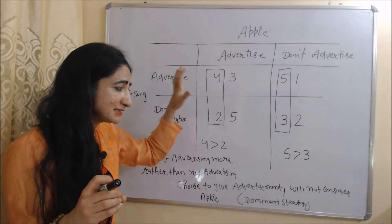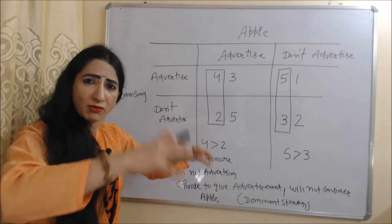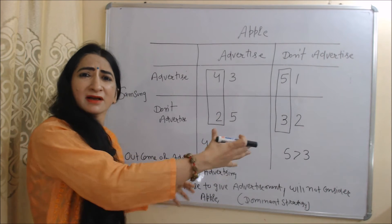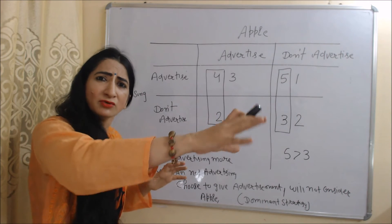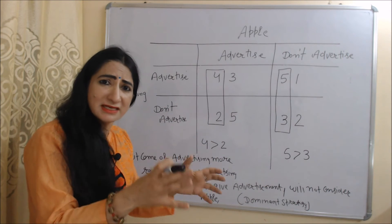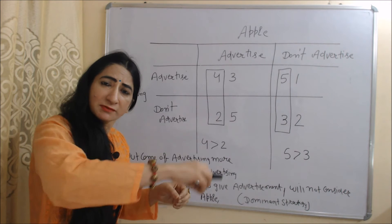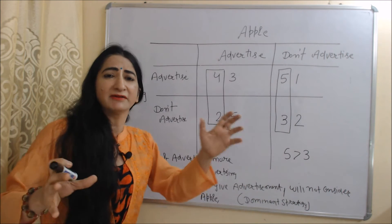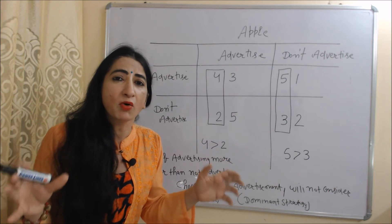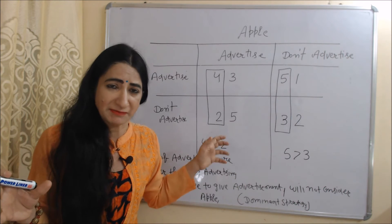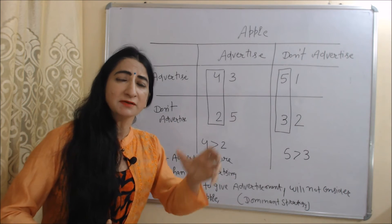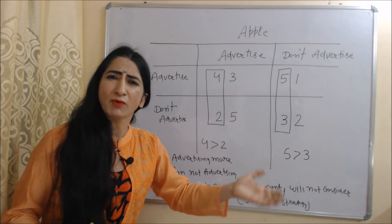That's why Samsung will definitely advertise in the market because this is the best strategy for Samsung. Samsung will focus on its best and will not consider what Apple does — whether Apple advertises or not, Samsung will not consider Apple. Samsung will only focus on its best, which means Samsung will advertise. Giving advertisement is called the dominant strategy of Samsung because in dominant strategy each player focuses on its best outcome no matter what the rival does.